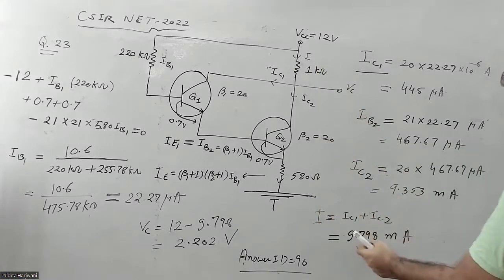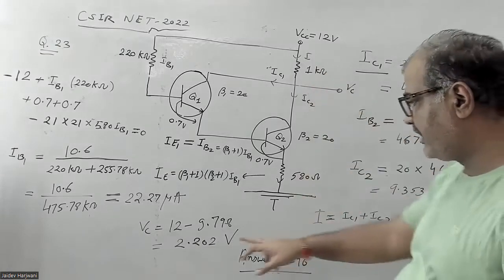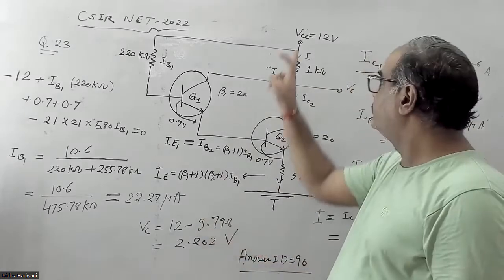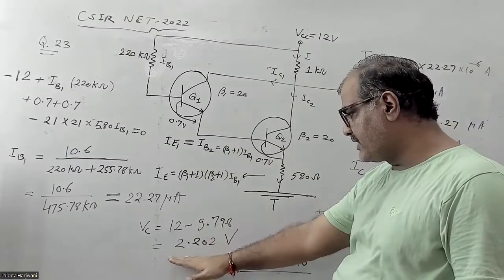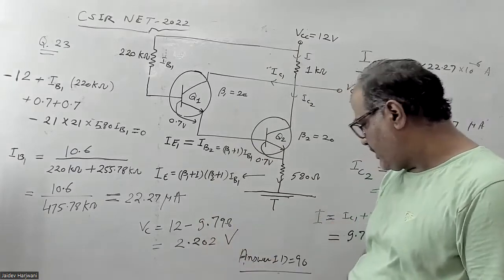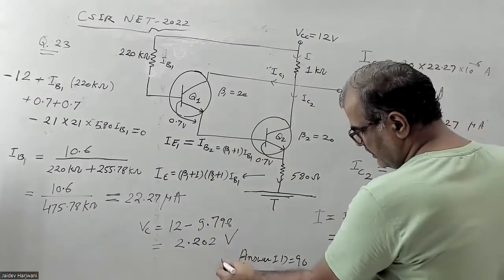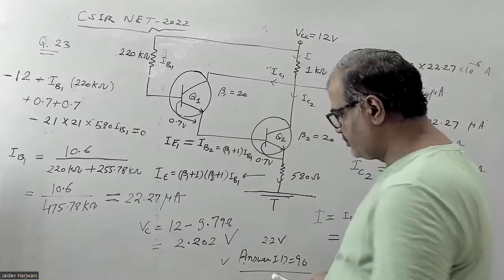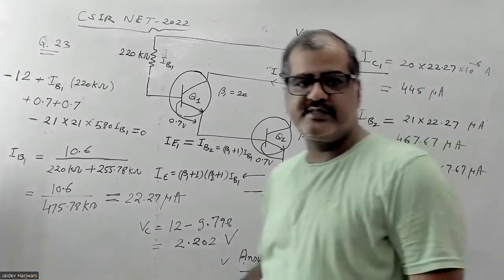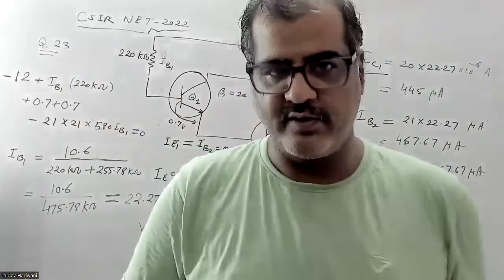So total current IE is now 9.798 milliampere. Once IE is known and VCC is 12, the total voltage is 12 minus 9.799, giving the answer 2.20 volts. This matches the given answer, which is also 2.2 volts. So this is the correct answer. I hope you understand the question — thank you very much.